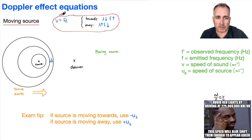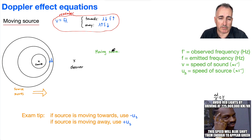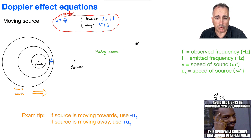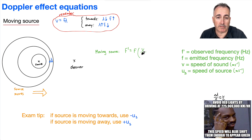This idea will really help us. Let's go through the equation from your data booklet — this has to do with sound. For a moving source, we'll say F-prime equals F times V over V plus or minus U-S.